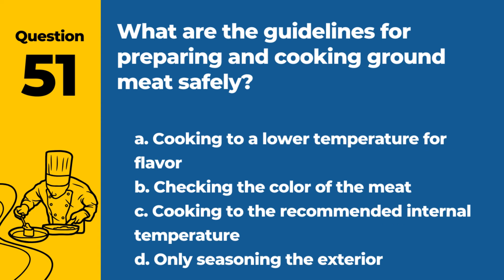Question 51. What are the guidelines for preparing and cooking ground meat safely? a. Cooking to a lower temperature for flavor. b. Checking the color of the meat. c. Cooking to the recommended internal temperature. d. Only seasoning the exterior. Answer: c. Cooking to the recommended internal temperature. Ground meat should always be cooked to the appropriate internal temperature for safety.